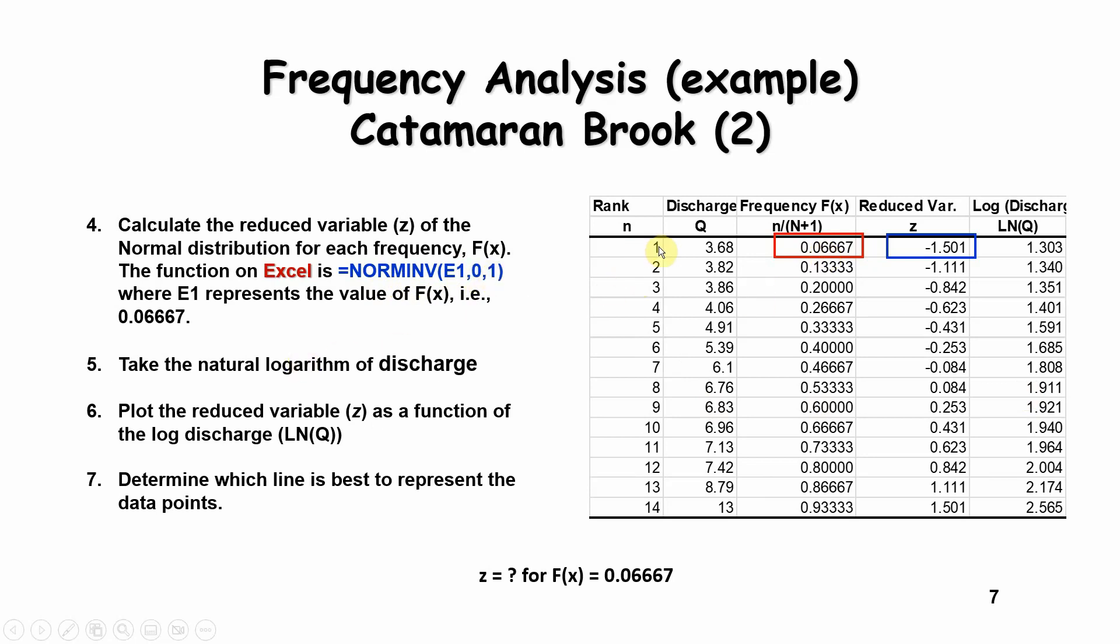So if I have my discharge, my rank, and my frequencies, the value of z here is calculated using this Excel function. Now, if you take the natural logarithm of this value right here, that will give you your two-parameter log-normal distribution.